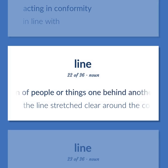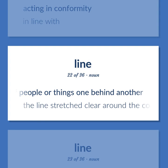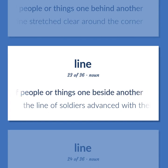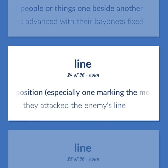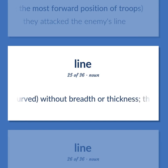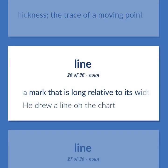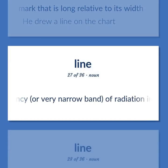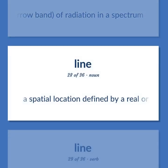Line: a formation of people or things one behind another. Example: the line stretched clear around the corner. A formation of people or things one beside another. Example: the line of soldiers advanced with their bayonets fixed. A fortified position, especially one marking the most forward position of troops. Example: they attacked the enemy's line. A length, straight or curved, without breadth or thickness — the trace of a moving point. A mark that is long relative to its width. Example: he drew a line on the chart. A single frequency, or very narrow band, of radiation in a spectrum. A spatial location defined by a real or imaginary unidimensional extent.